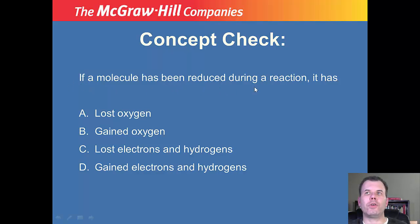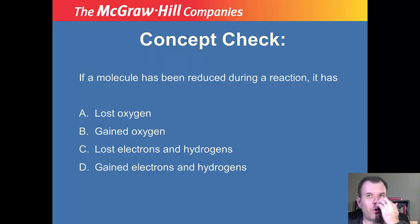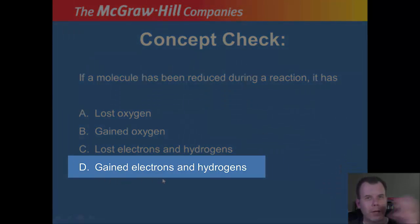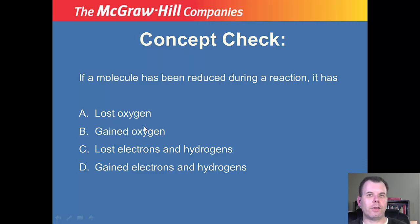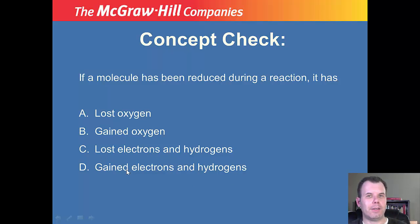If a molecule has been reduced, it has gained electrons and hydrogens, making it more negative. That's what reduction means. Oxidation is the opposite — losing electrons, becoming more positive. Here's ATP again: adenine, ribose sugar, and three phosphate groups. The high-energy bond is between the two phosphates. When you make ATP, energy is stored there; when you break that bond, it releases energy to drive your cells. Think of ATP as the energy currency of the cell — like the dollar bill you need to buy lunch.